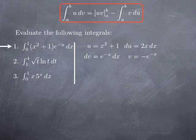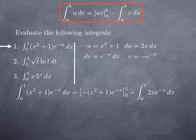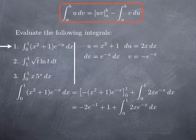Now we plug into the formula. The integral equals the function u·v, which is −(x² + 1)e^(−x), evaluated between 0 and 1, minus the integral of v·du. Since v·du = −2x·e^(−x), we get plus the integral from 0 to 1 of 2x·e^(−x). Evaluating the first term between 0 and 1: the value at 1 is −2e^(−1), and subtracting the value at 0, which is −1, gives −2e^(−1) + 1. To that we add the integral from 0 to 1 of 2x·e^(−x), which we evaluate by parts.